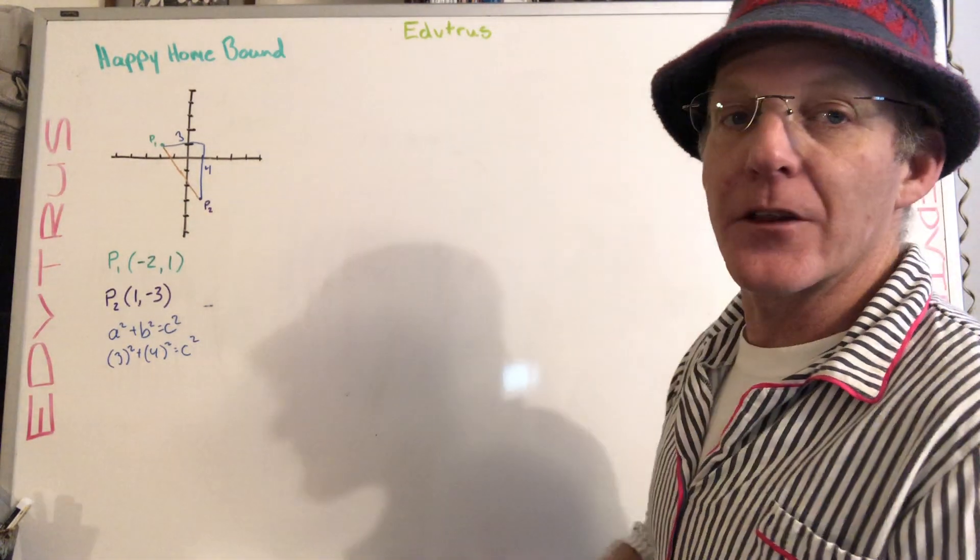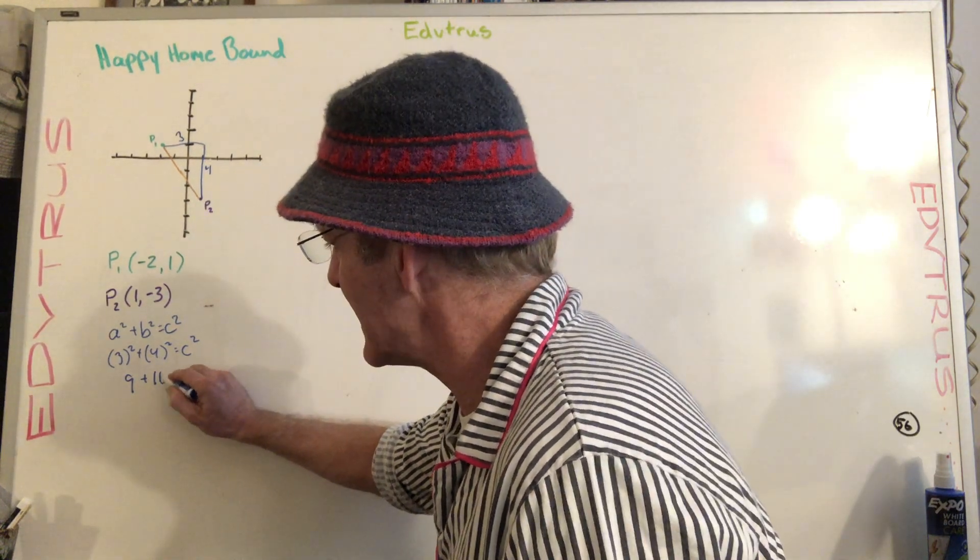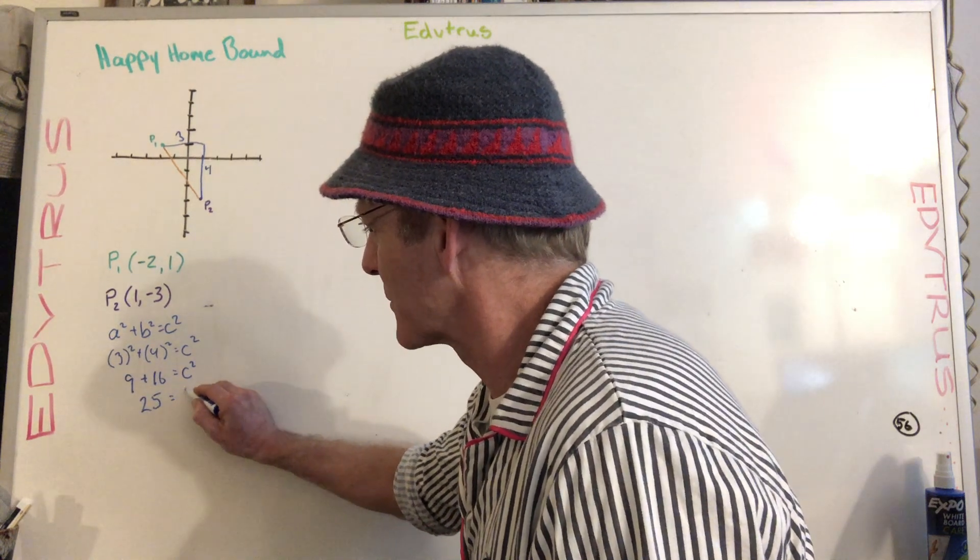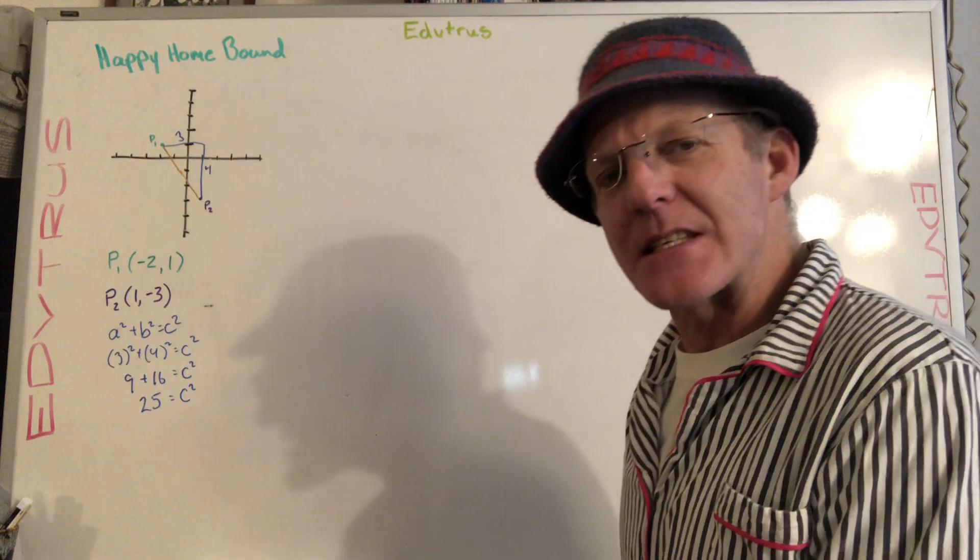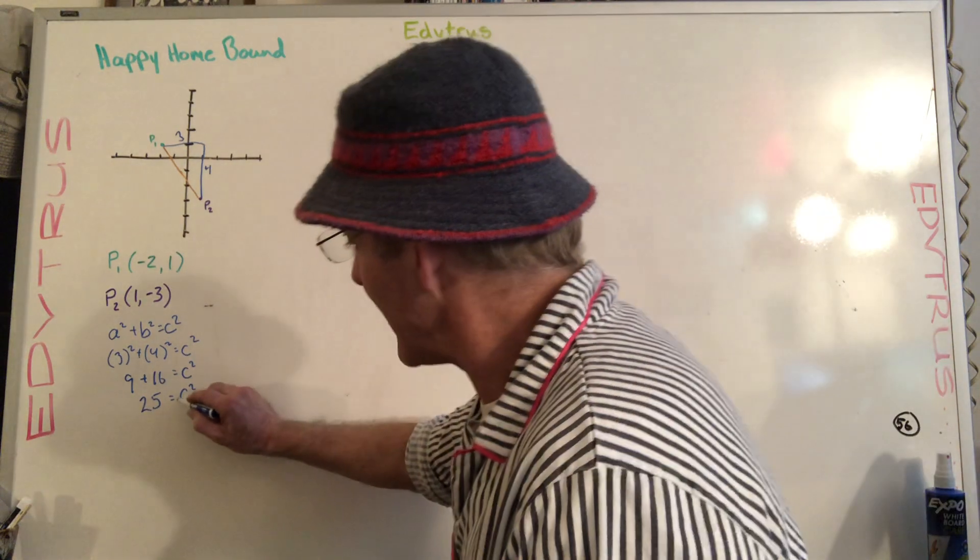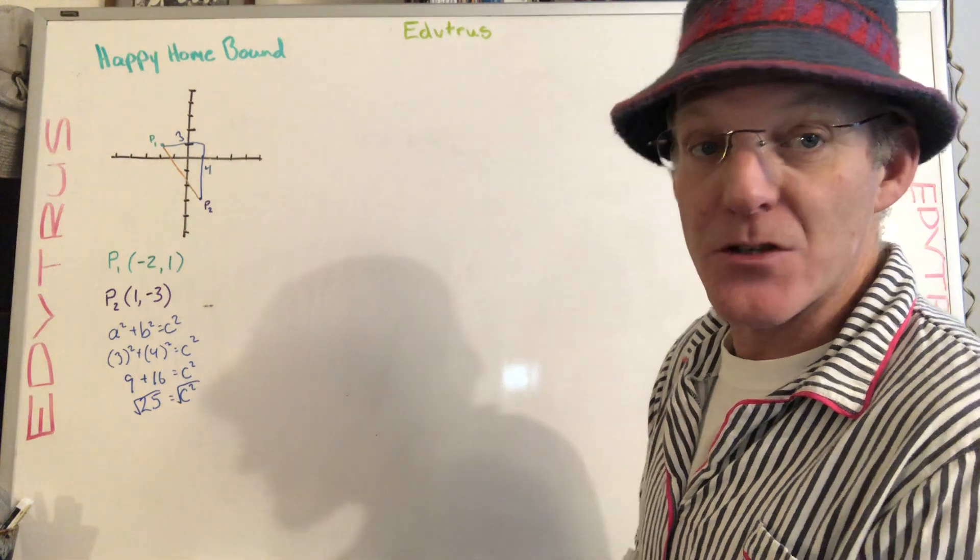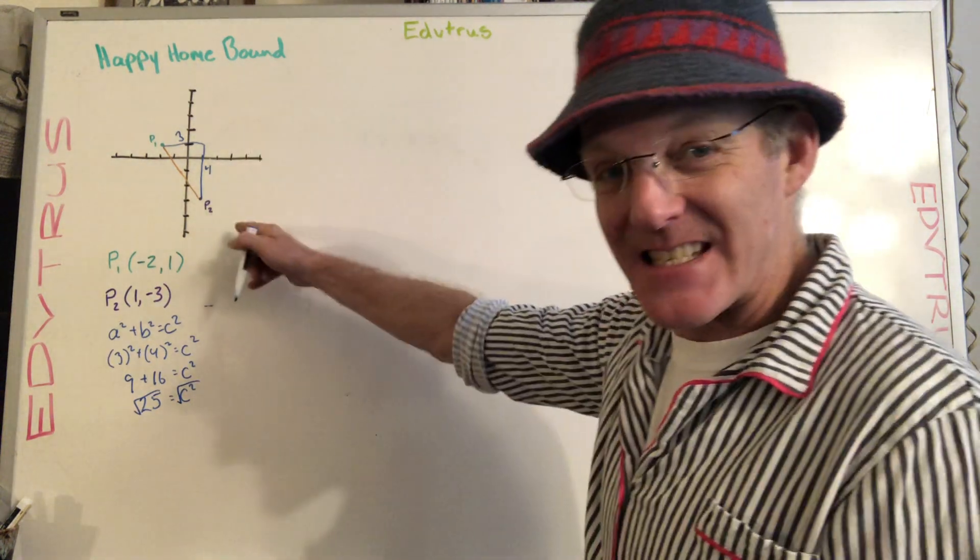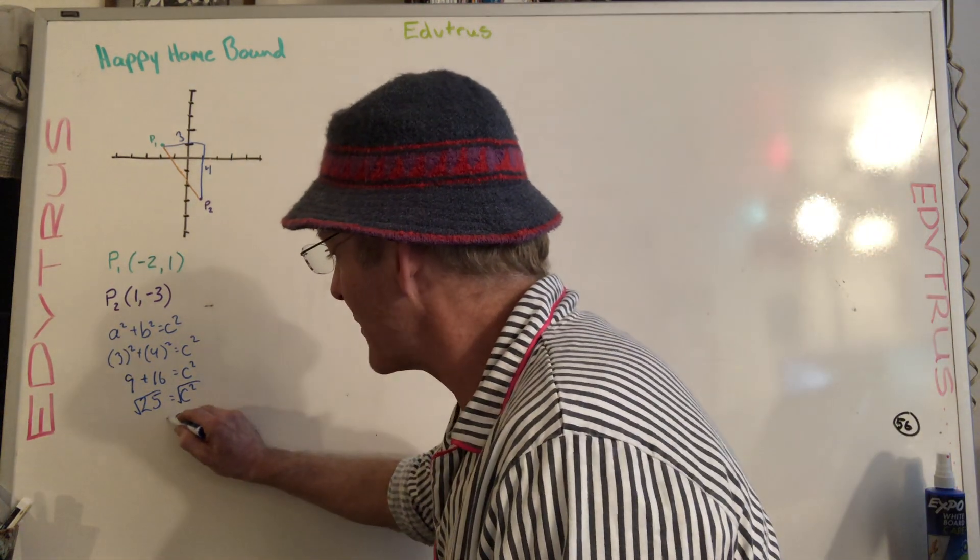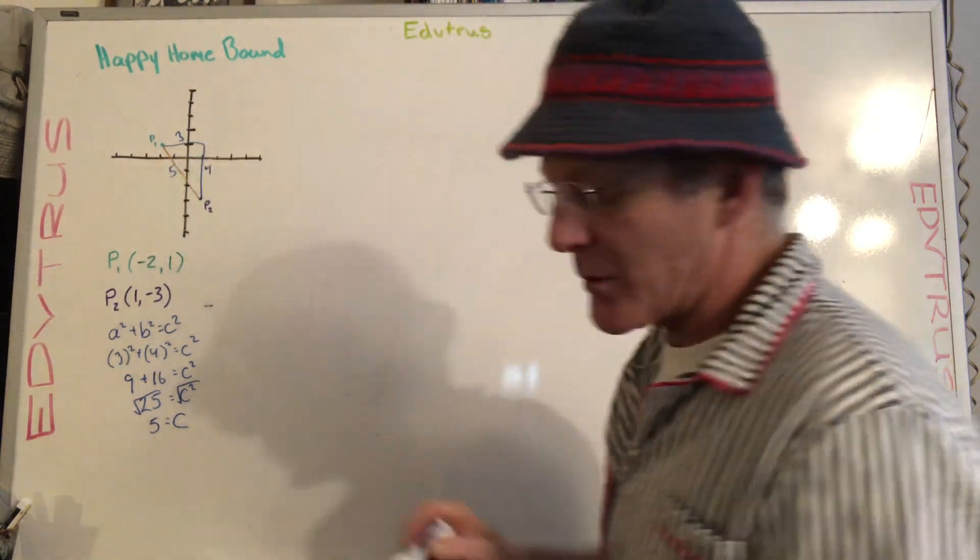After we went ahead and followed the order of operations and did three squared is nine, and four squared is 16 equals C squared. We could go ahead and add them together and get 25 equals C squared. And how do we get C by itself, the hypotenuse by itself? Right, we square root both sides. Now, normally I would remind you that we're going to do plus or minus because we're square rooting both sides to get rid of a square. But in this case, we know that we're talking about a distance and a distance is always going to be positive. So we're going to say that C or our hypotenuse is five units long. And we've solved it right there using the Pythagorean theorem.